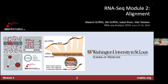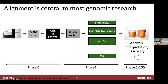We are going to cover some alignment topics. Alignment is really central to most genomic research — it's one of the main currencies of bioinformatics. This high-level workflow is super common: you have your DNA or RNA samples of interest and you send them for sequencing.